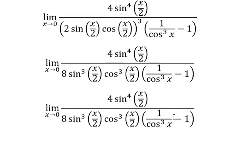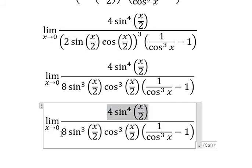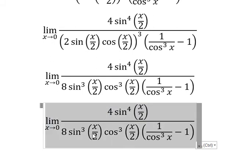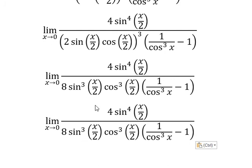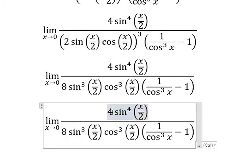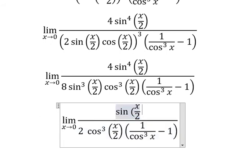Next, we can simplify this one with this one. So we have 1 over 2 — this one and this one cancel — so we just have sine of x over 2.